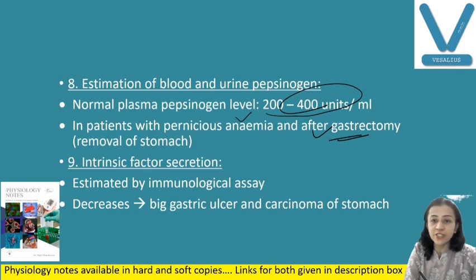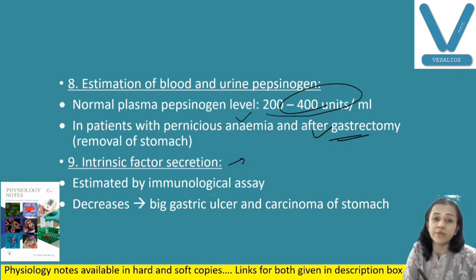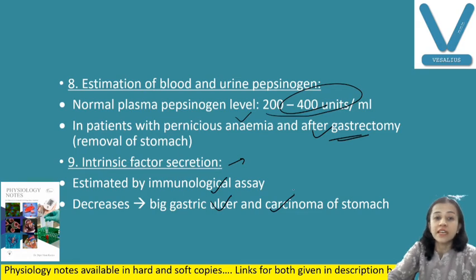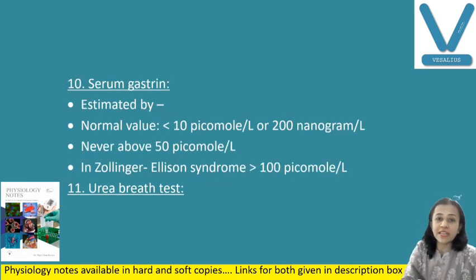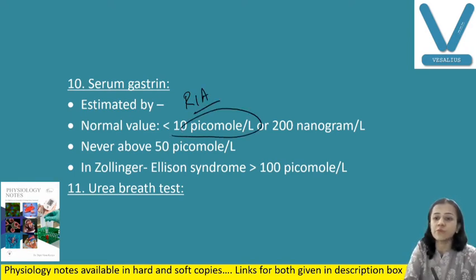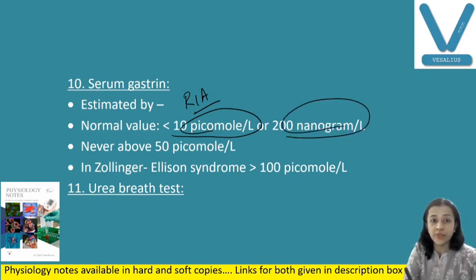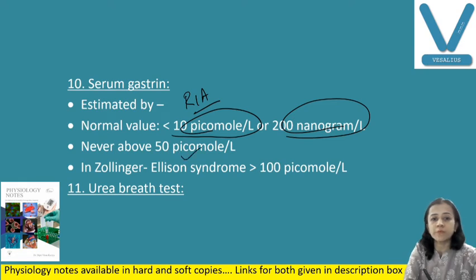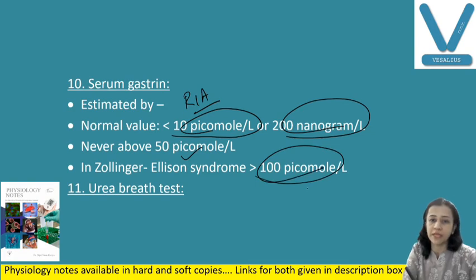Another is intrinsic factor secretion, which is commonly assessed in cases of pernicious anemia. This is estimated by immunological assay, and if there is gastric ulcer or carcinoma, it is reduced. Then serum gastrin — the serum gastrin is also estimated by radioimmunoassay. Normal value of serum gastrin is less than 10 picomoles per litre or 200 nanograms per litre, and it should never be above 50 picomoles per litre. In Zollinger-Ellison syndrome, this may be more than 100 picomoles per litre.